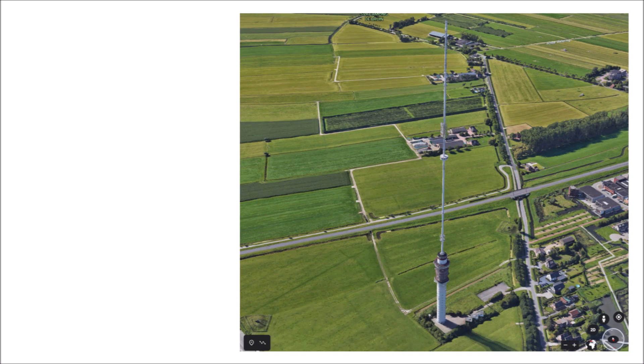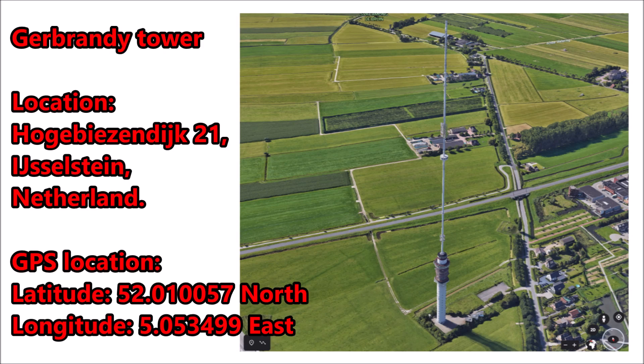The satellite list can be saved, including the added antenna, and is available whenever you use Satellite Director again. An example of a broadcasting tower is the Gerbrandy Tower in the Netherlands, which is located at Hoag-Biesendijk 21, Ijsselstein in the Netherlands, or at 52.010057 north and 5.053499 east. Now let's show you how to add an antenna.